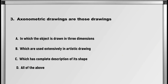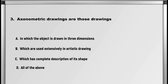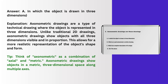Axonometric drawings are those drawings: A. In which the object is drawn in three dimensions, B. Which are used extensively in artistic drawing, C. Which has complete description of its shape, D. All of the above. Answer: A. In which the object is drawn in three dimensions.